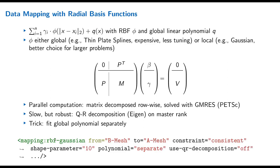In the config for RBF interpolation: we define the method, choose local Gaussians, specify the meshes and the constraint. The shape parameter is a tuning parameter that determines how the RBFs look and effectively sets the support radius — this depends on your meshes and sometimes requires trial and error. We compute the polynomial separately as just described, and solve with PETSc rather than QR decomposition.